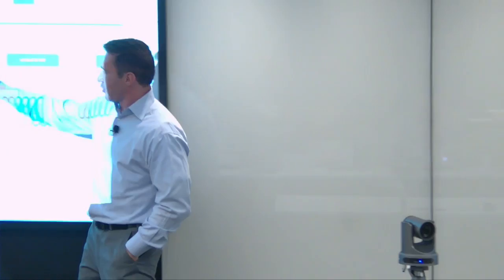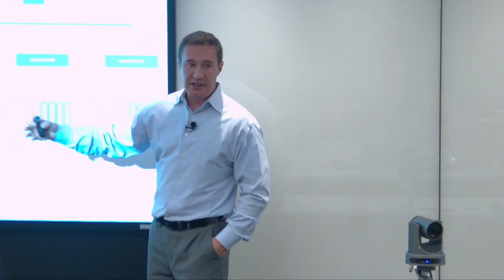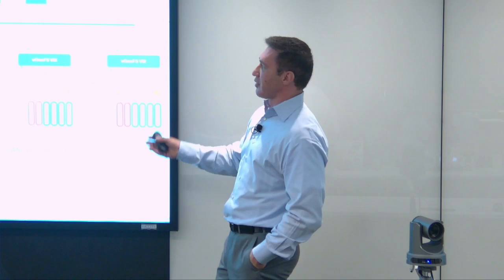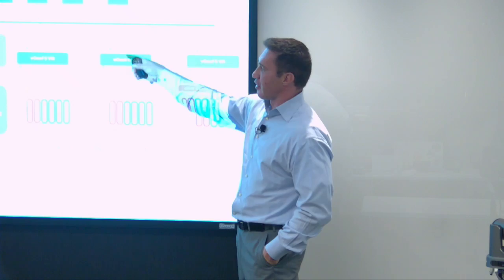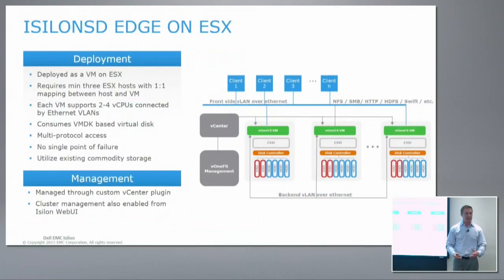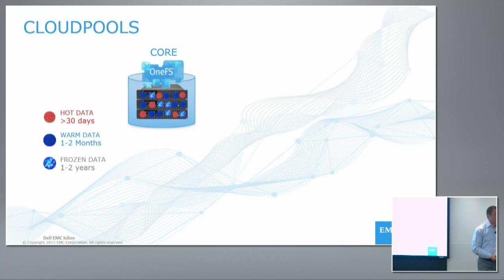This is an architectural drawing of how the SD Edge works running inside a virtual machine. vCenter is used to control it, along with V-OneFS management. The minimum requirement is three servers because we need a quorum — we need at least three — and we can go up to six. Each node consumes some virtual CPU and some VMDKs, but there are no single points of failure. For all intents and purposes, this looks to the administrator like a physical Isilon, except it's running in virtual machines. The VMDKs come from the local disk inside the hypervisor.